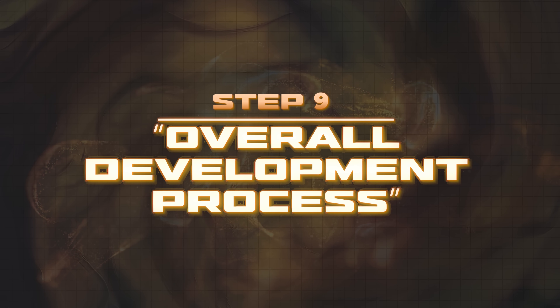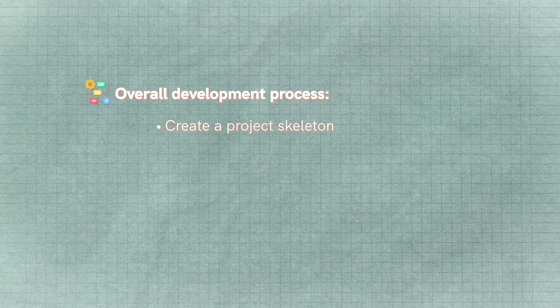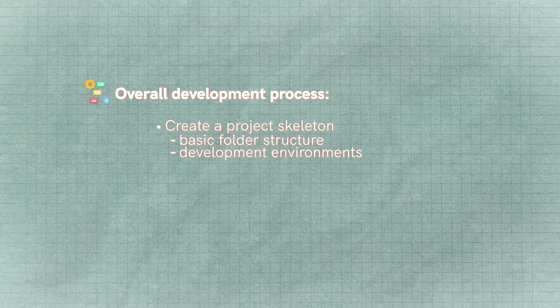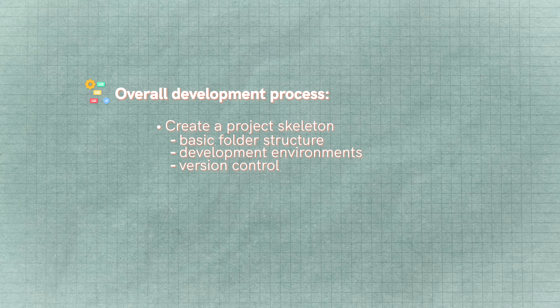Now we move on to step number nine: my overall development process. Once I know the stack, have the user stories, have the wireframe, and have a solid plan, I start actually writing code. First I create a project skeleton — basic folder structure, development environment, version control — which gives me a foundation to build on without being overwhelmed.